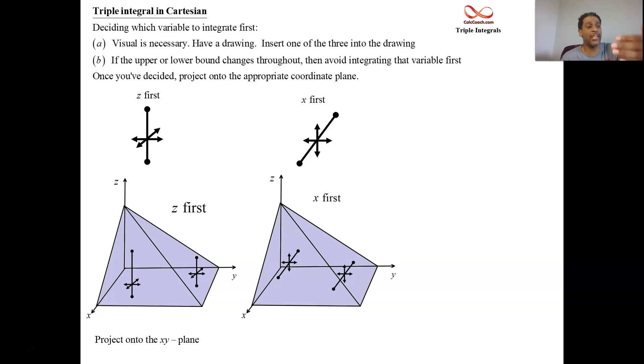And you're checking to see if the back is always the back and the front is always the front and it doesn't change on you. If that's the case, that's fine. Then you should use that variable first. And then after integrating out that variable, you project onto the plane, the coordinate plane, where that variable is equal to zero. When x is equal to zero, you're back on the y, z plane.